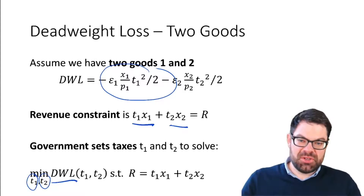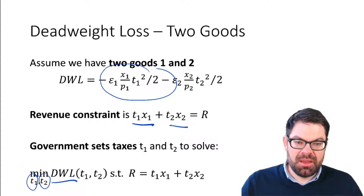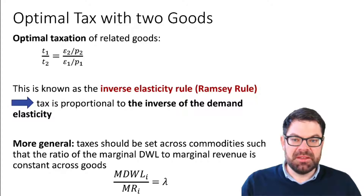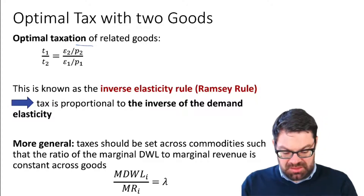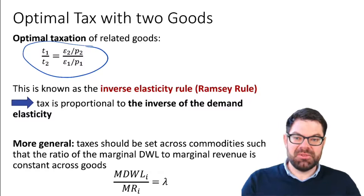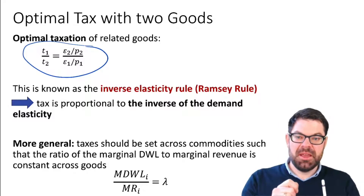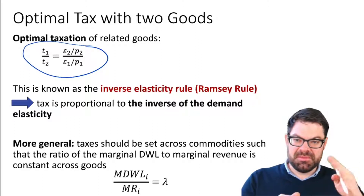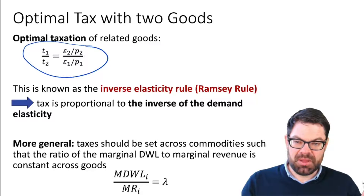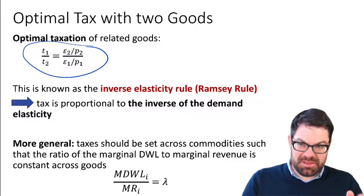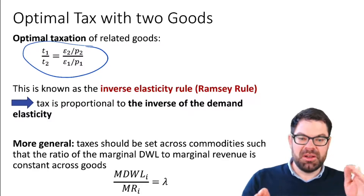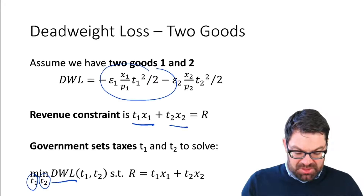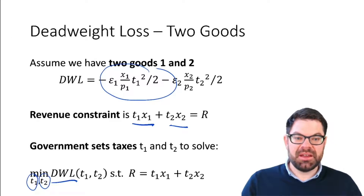What it comes down to ultimately is this rule up here, whereby the ratio of the two taxes is proportional to the inverse of the demand elasticities. We're going to derive how we get there, and then also talk about the interpretation.